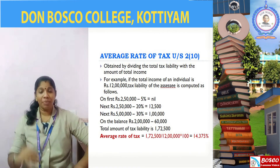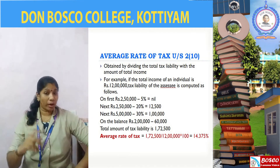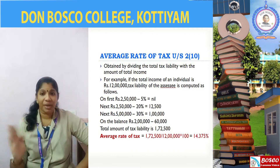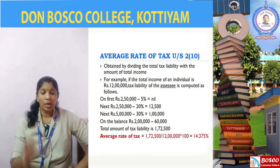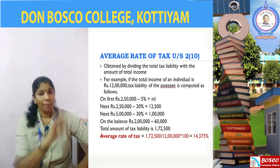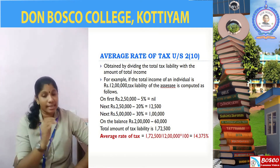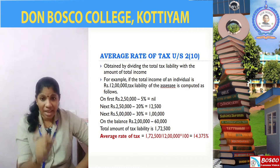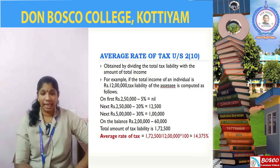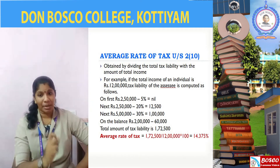Now let us compute the average rate of tax. Total income is 12 lakh. Average rate of tax equals total tax liability divided by total income. Total tax liability is rupees 1 lakh 72,500 divided by 12 lakh — that is 14.375%.